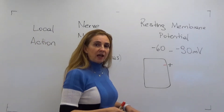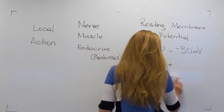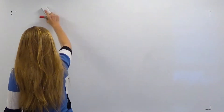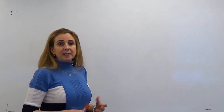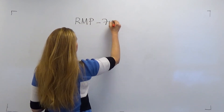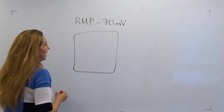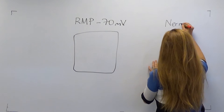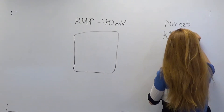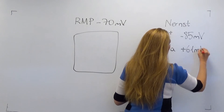Let us try to understand local potentials by giving examples with numbers and specific ions. Let us imagine that we have a cell with a resting membrane potential of minus 70 millivolts. The Nernst potential for potassium in this imaginary cell is minus 85 millivolts, and the Nernst potential of sodium in the same cell is plus 61 millivolts.